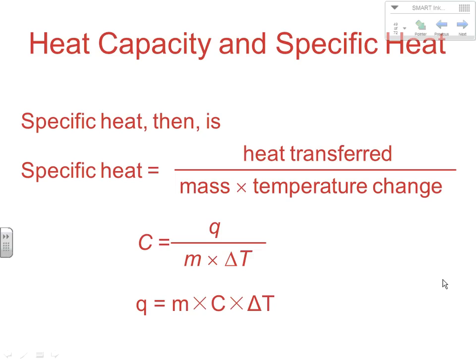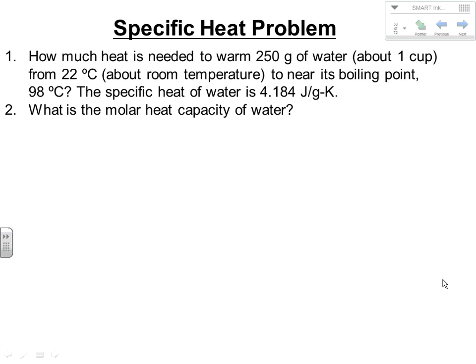When calculating delta T, like all deltas, it would be final minus initial: ΔT = T_final − T_initial. That establishes the sign — whether it's positive or negative — indicating whether energy is going into or out of the system.